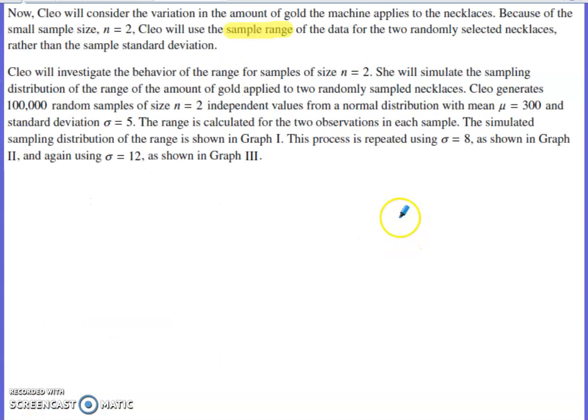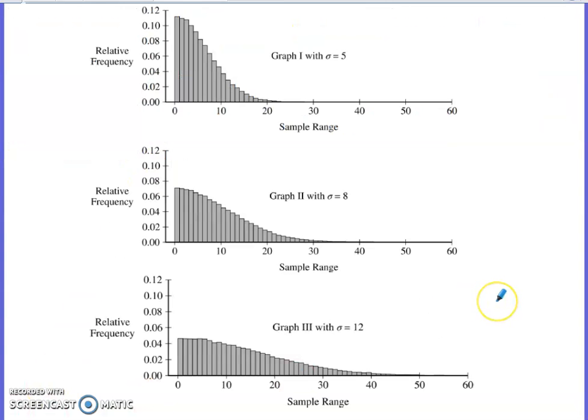What she went ahead and did, in addition to that, she adjusted the standard deviation to 8 and then again adjusted it to 12. And we see those sampling distributions for the sample ranges shown in graph two and graph three. So these have the same general sort of shape. We see the peak on the left, and they're definitely all skewed to the right. Obviously, the peak is higher with the smaller standard deviation than it is with the larger standard deviations. And the skew is definitely being dragged out further for the higher standard deviation sampling distributions.